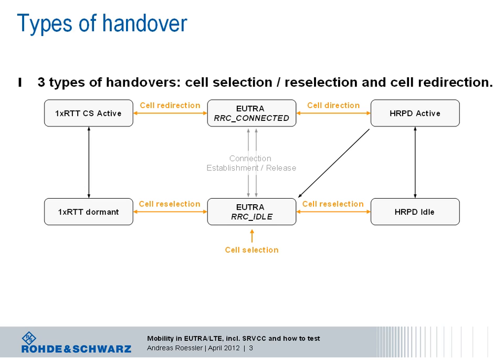The cell reselection process is, as discussed, under the control of the device — meaning when there is no active connection with the network. In case there is an active connection, the handover is a cell redirection. Again, there are several options: in LTE on the same carrier frequency and the same band, which we call intra-frequency handover; or still in LTE but to a different carrier frequency that could be in the same frequency band but is most likely in a different frequency band.